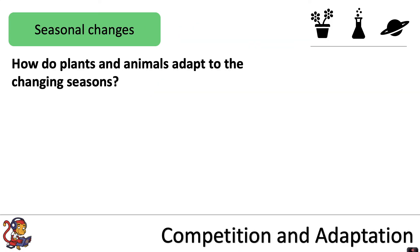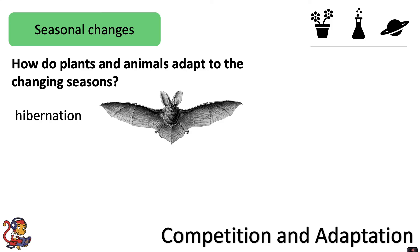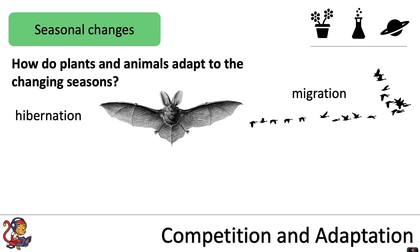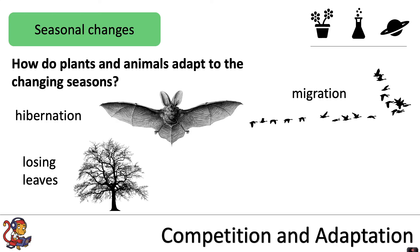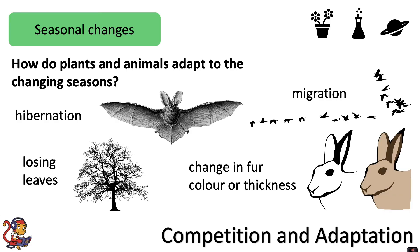Some plants and animals have to adapt throughout the year according to the changing seasons. For example, some animals hibernate — reducing their body temperature over winter when food is scarce. Some animals migrate, moving to a hotter climate when the weather gets too cold. Some trees lose their leaves in autumn and over winter. Some animals even change their fur colour or thickness — for example, the arctic hare has a white coat in winter for camouflage in the snow, which turns brown in summer to camouflage against the ground and rocks when there is no snow.